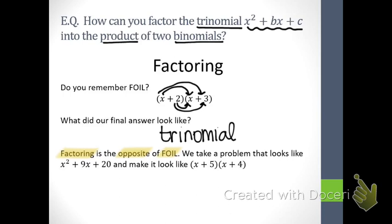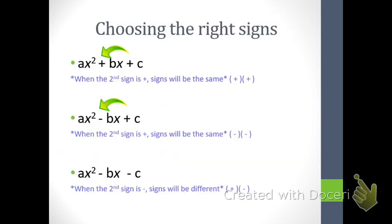We take a problem that looks like x squared plus 9x plus 20 — a trinomial — and we make it look like x plus 5 times x plus 4. So we're taking a trinomial and putting it back into a multiplication problem with two binomials. Factoring is the opposite of FOILing. Now, let's look at choosing the right signs, because if you cannot choose the right signs, your whole answer is going to be wrong. That's why we're focusing on the signs first.